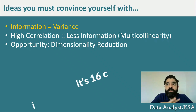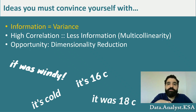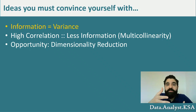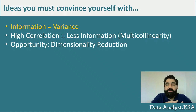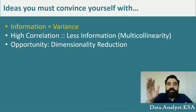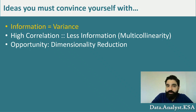Now imagine asking the same question and getting varied answers: 16 degrees Celsius, felt cold, windy, 18 degrees Celsius. The variance in the data tells me more — it's windy, it felt colder than 16 degrees, someone checked and it was 18 degrees. So getting thousands of observations with very low variance gives less information than fewer observations with high variance. This is the first idea: variance and information are proportional.